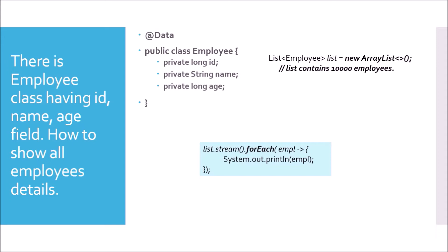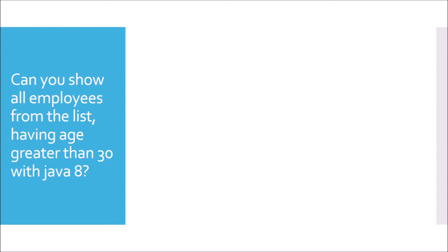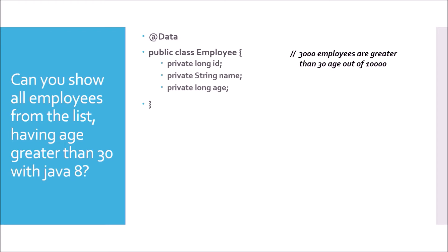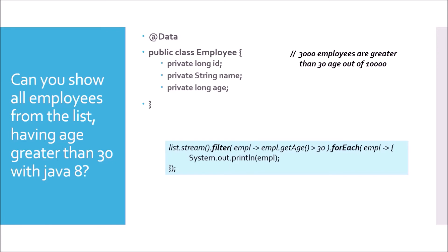Can you show all employees from the list having age greater than 30 with Java 8? There are two parts: first, filter the employees with age greater than 30; then, show those employees. Using the Employee entity with 3,000 employees out of 10,000 being older than 30: list.stream().filter(employee -> employee.getAge() > 30).forEach(employee -> System.out.println(employee)). Instead of a lambda expression, you can also use a method reference — Employee::getAge.